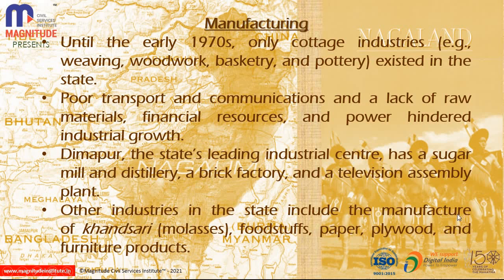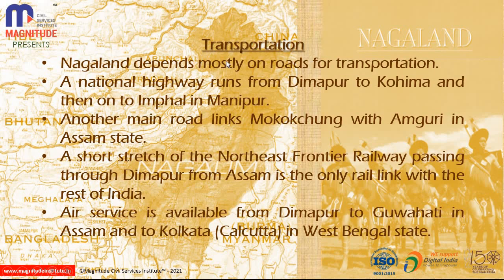Nagaland mostly depends on road transportation. The national highway connects Dimapur, Kohima, and Manipur. Main roads link Mokokchung and Assam state. There is a short stretch of the North East Frontier Railway from Dimapur going into Assam. Air service is also available from Dimapur to Guwahati, and flights connect Nagaland to Kolkata as well.